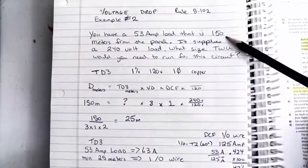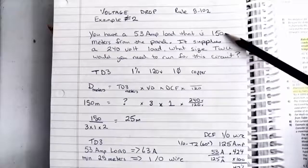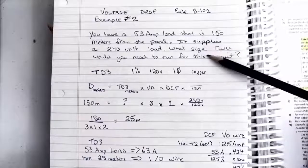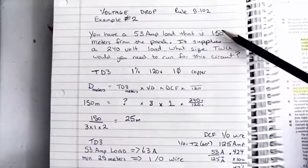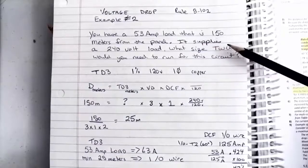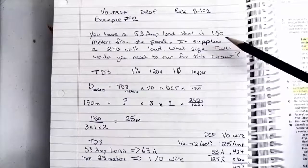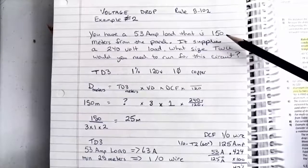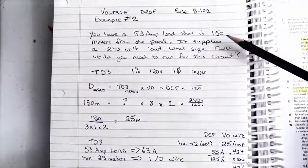This question specifically talks about supplying a load from a panel, so we know that's a branch circuit. When we look at voltage drop for a branch circuit, we know that we're allowed a maximum of 3% voltage drop.